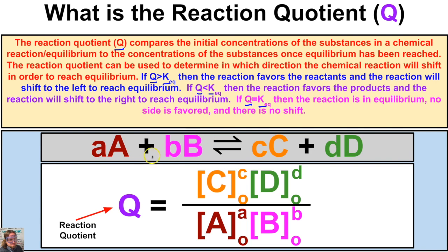Let's apply this concept. Suppose we have a reaction where A plus B produces C and D, and we want to find Q. To get Q, we take the product of the initial concentrations of our products — the initial concentration of C raised to the coefficient c power, times the initial concentration of D raised to the coefficient d power — divided by the initial concentrations of our reactants: concentration of A raised to the a power times concentration of B raised to the b power.